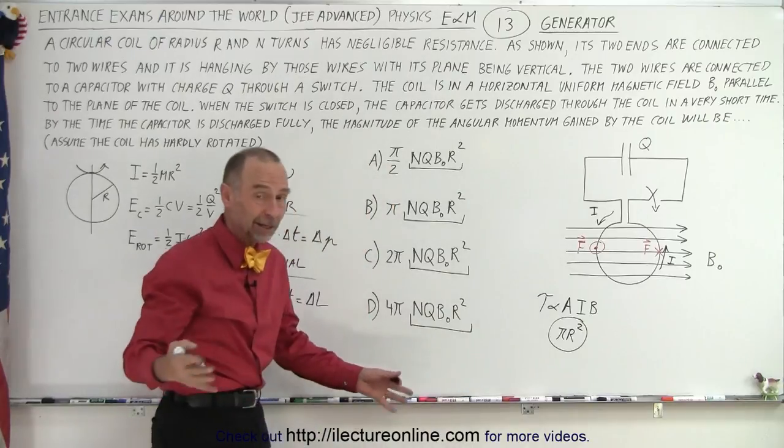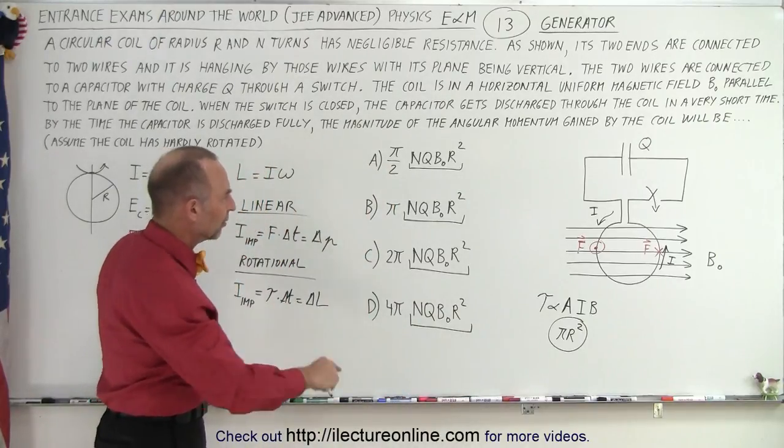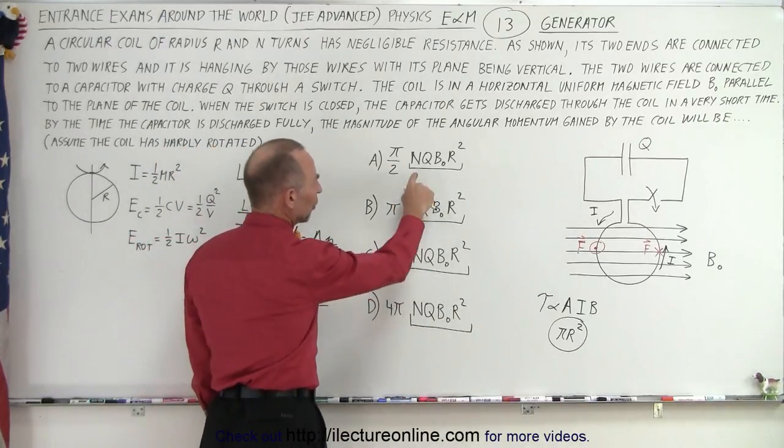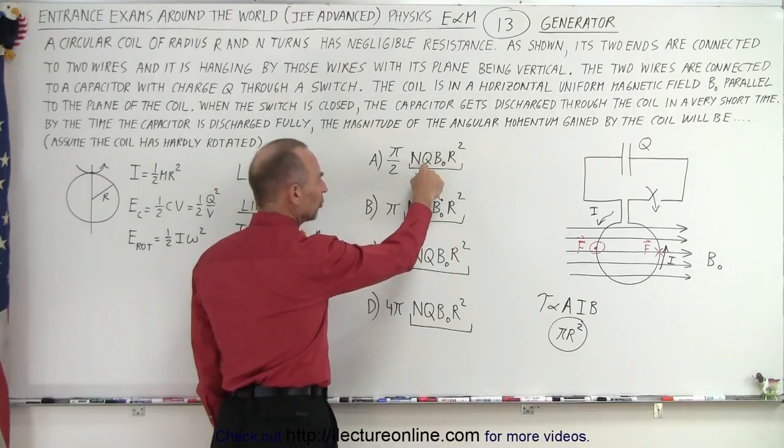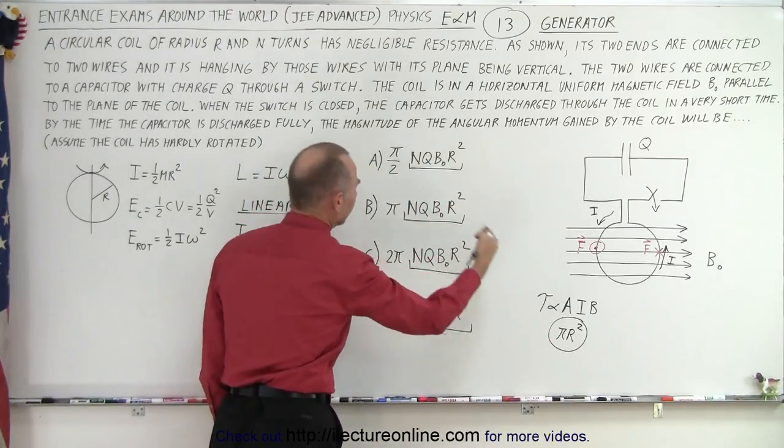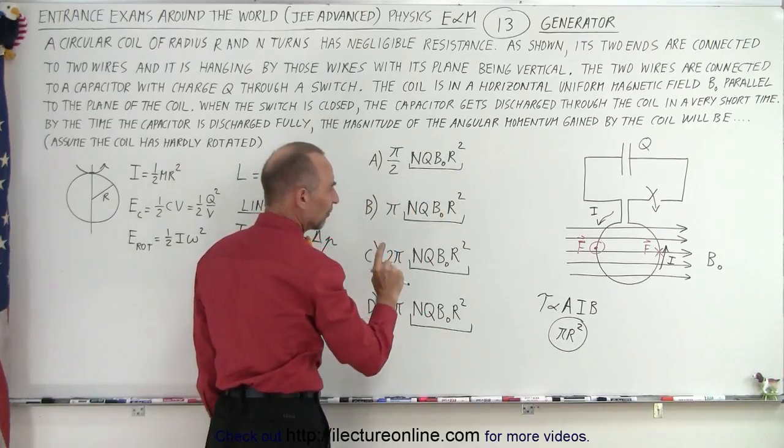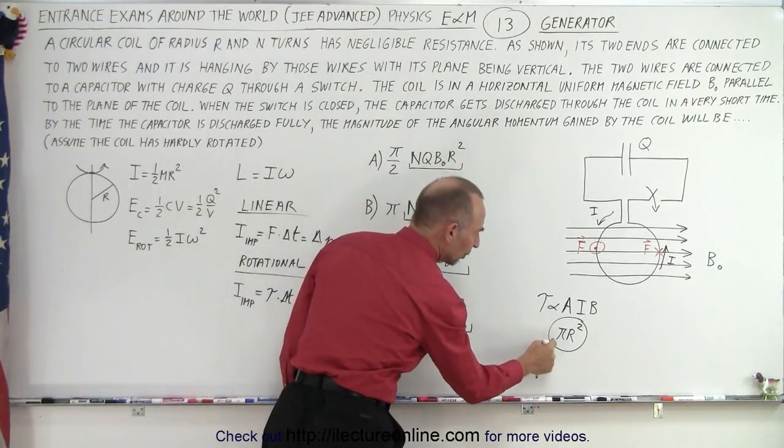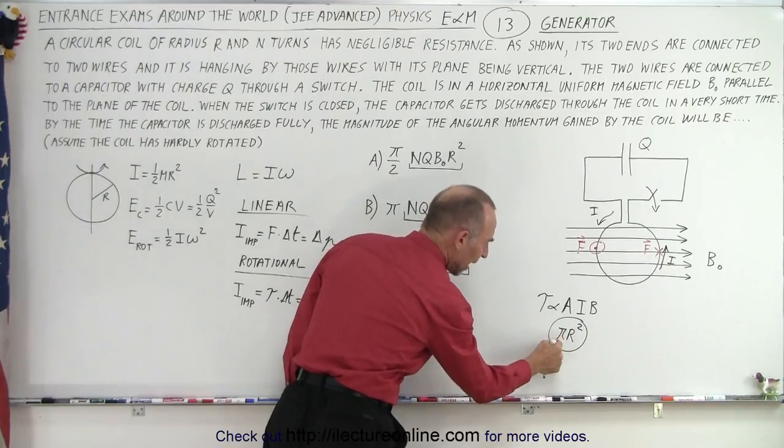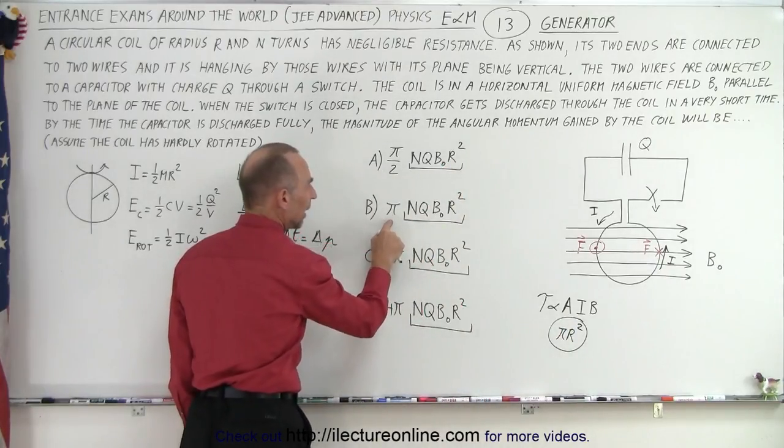And the torque is proportional to the area of the loop times the current times the magnetic field. Of course, the current may not be constant. The number loops, the amount of charge, obviously the more charge the more current, the B field, the strength of the B field, all that makes sense.